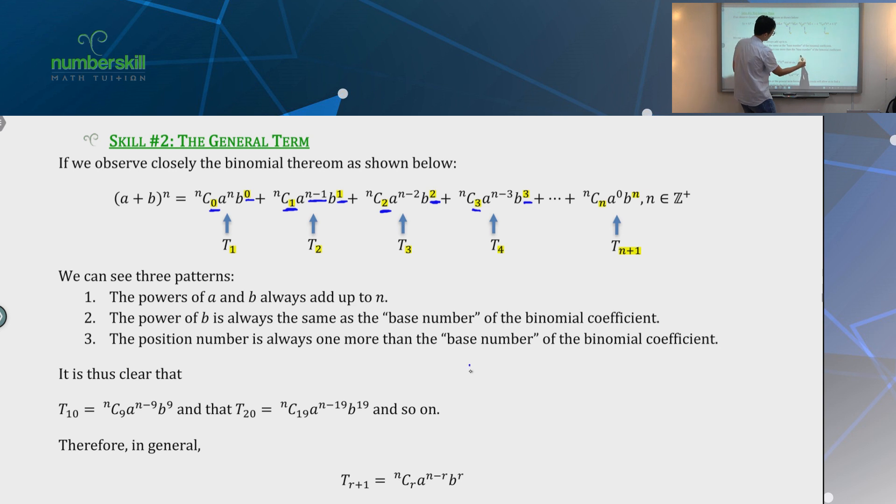Second thing. But yeah, so what if I know this? So for example, I know Nc5. And then, of course, A will be N minus 5, B will be power of 5. That's all I know. But I don't know what number is this. Is this term 6, term 5, term 100? You need to then link this to the position number.